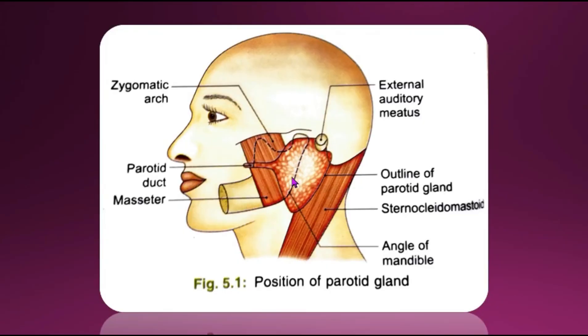Welcome to this video about the parotid gland. The parotid gland is the largest of the salivary glands, weighing about 25 grams. It is situated below the external acoustic meatus, between the ramus of the mandible and the sternocleidomastoid muscle.